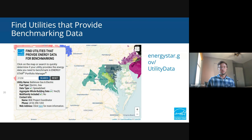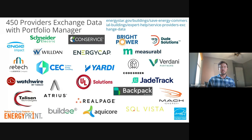One type of entity that provides benchmarking data is utilities. We have an interactive utility map at energystar.gov/utility-data. Some utilities offer data via spreadsheet, some offer automated flow of data into the tool. You can zoom around the map, click on a utility service territory, enter a zip code, and find information about the service a utility is providing. EPA is supporting all Maryland utilities because the state has a requirement for all utilities to provide this data. There are also over 450 service and product providers that can exchange data with the tool automatically and are the biggest driver of benchmarking.